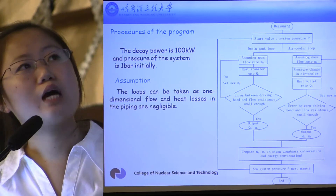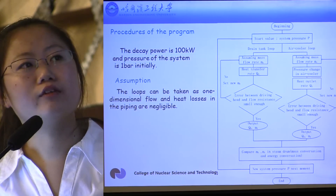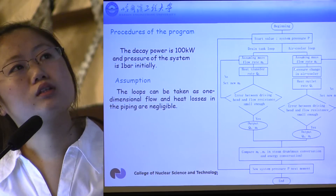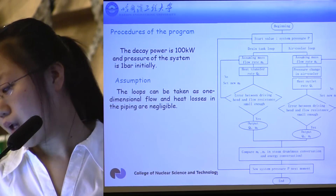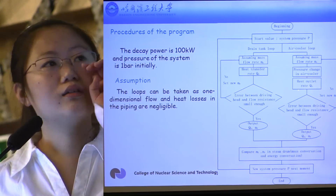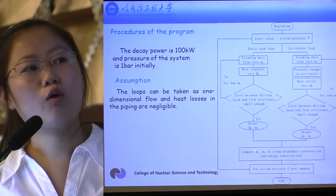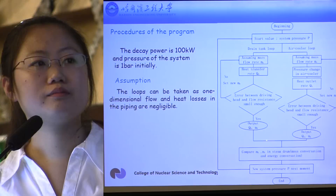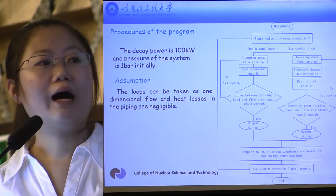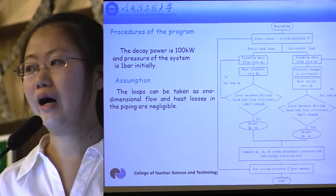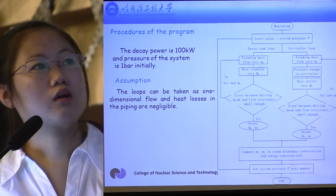The second step is to calculate the air cooler. Since the driving head and the resistance are nearly the same, parameters such as the mass flow rate of condensate, the pressure change in the air cooler, and the heat outlet rate are obtained. The third step is to compare the mass flow rate of steam flowing in and out of the steam drum. Applying mass and energy conservation in the steam drum, the system pressure is calculated. Then the initial value is used to calculate the next time step, and the procedures are repeated to obtain all parameters.